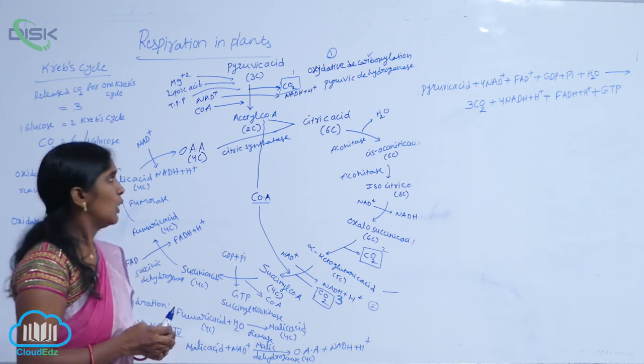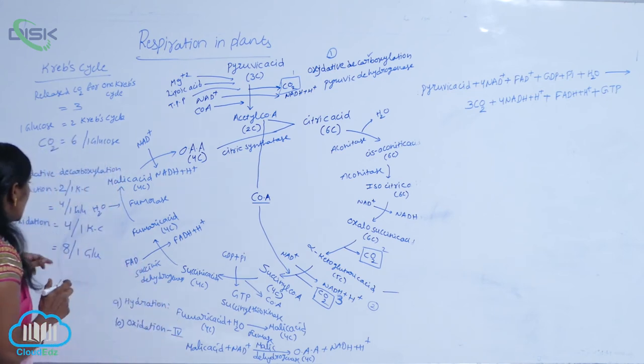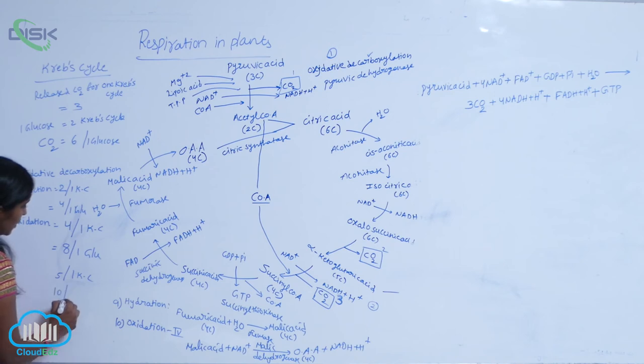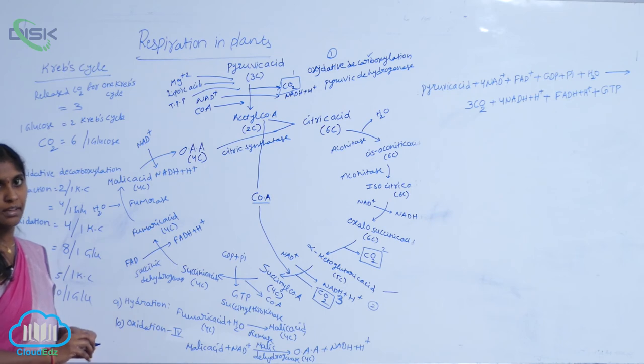So that is why we write as oxidative reactions 4 plus 1. So they are 5 per 1 Krebs cycle and 10 for 1 glucose molecule including the intermediate reaction.